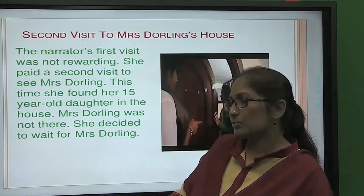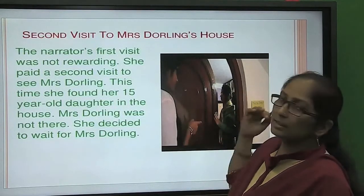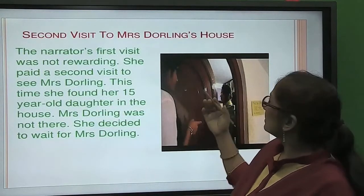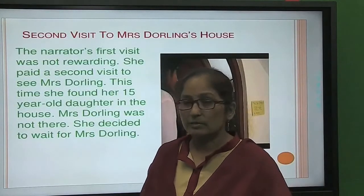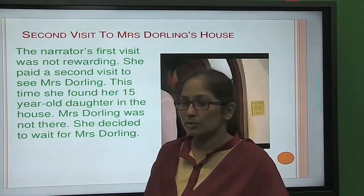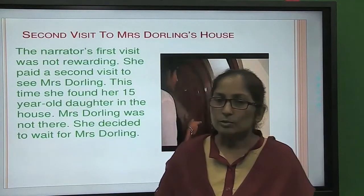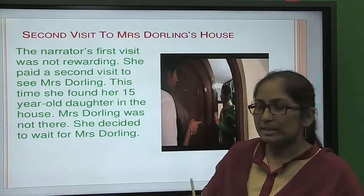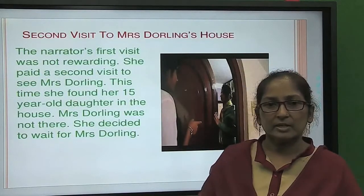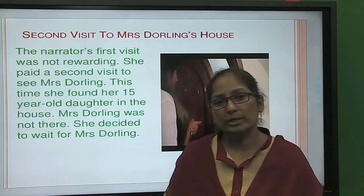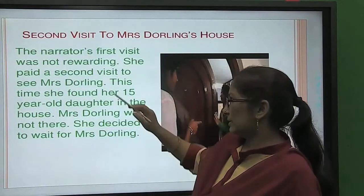Now let's come to the next part of this story — the second visit to Mrs. Darling's house. The first visit of the narrator was in vain because Mrs. Darling refused to meet her. Then again she decided to go to that address, so this was the second visit.